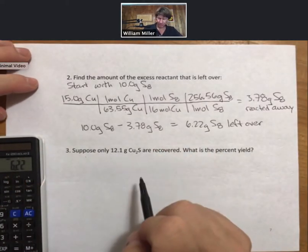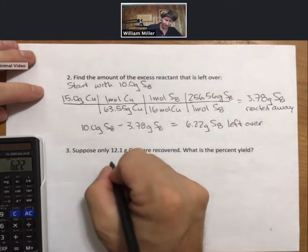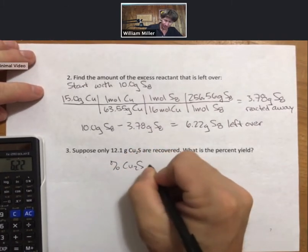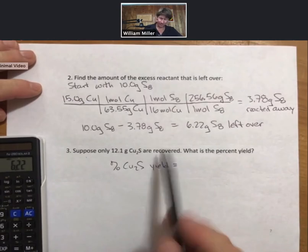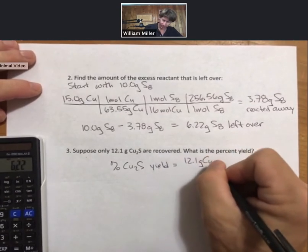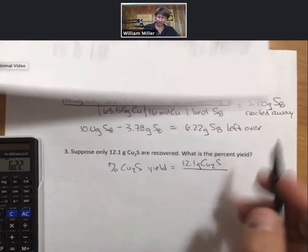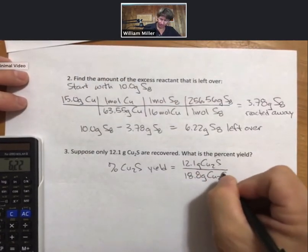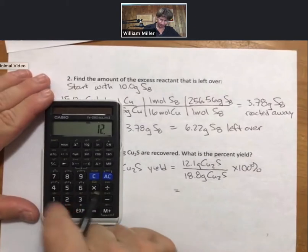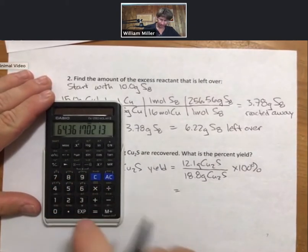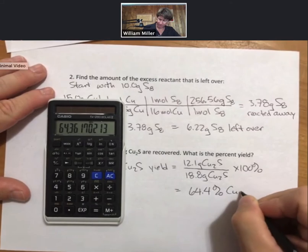Add in just another bit here so we can do another percent yield. Suppose only 12.1 grams of copper 1 sulfide are recovered. What is the percent yield? Percent yield is always going to be actual amounts, 12.1, over theoretical amount, 18.8. Times 100%. 64.4 percent copper 1 sulfide yield.